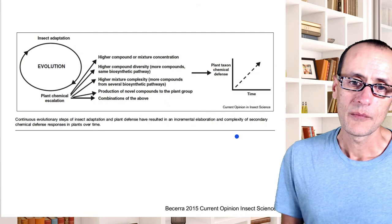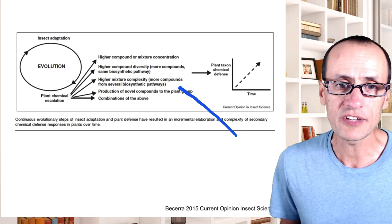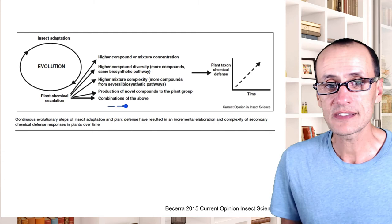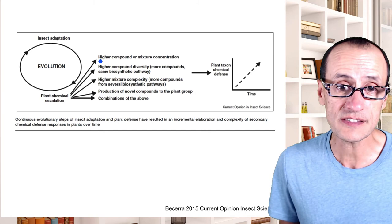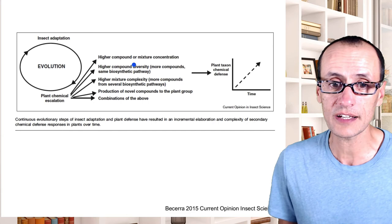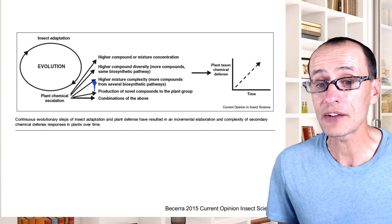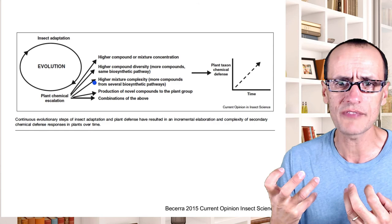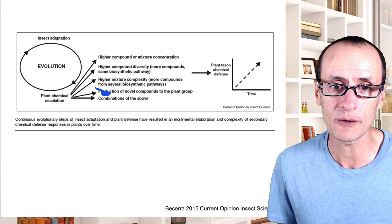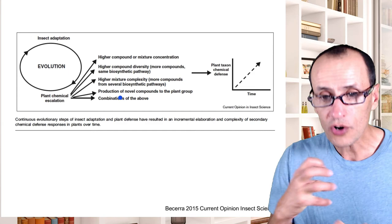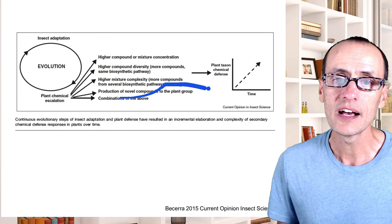Back to the Ehrlich and Raven scenario: if there is this continual co-evolution between insects and plants, what you would expect is a variety of ways in which plants could escalate their defenses. They can increase the concentration of the compounds, have more different kinds of compounds, or have compounds from very different biosynthetic pathways with very different modes of action — challenging the detoxification machinery of insects much more. They could also produce completely novel compounds or strategies. The longer this interaction takes place, the more of these you would expect to accumulate over time.